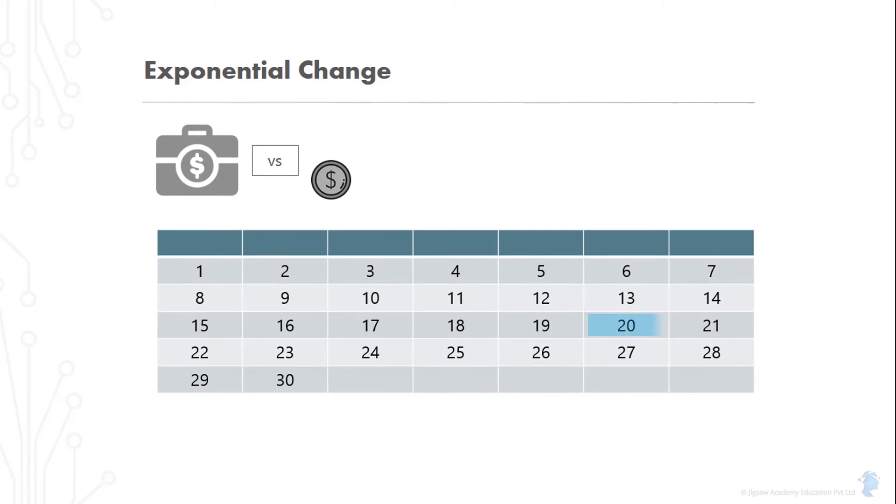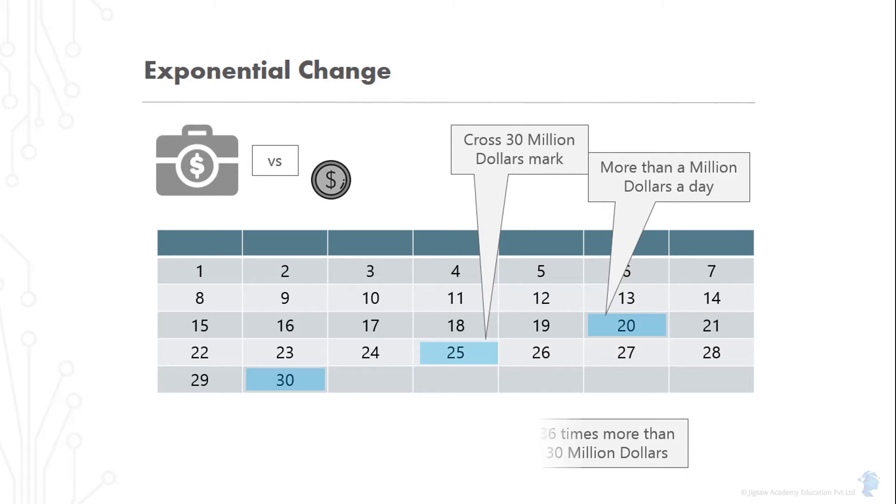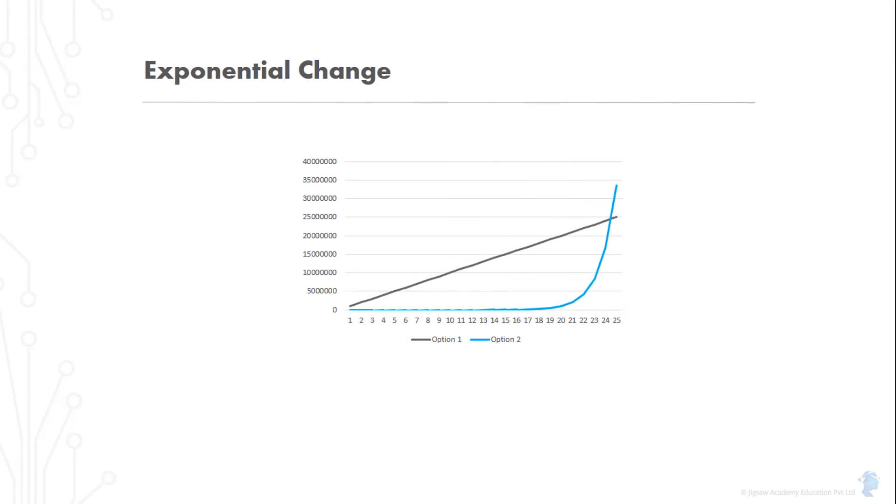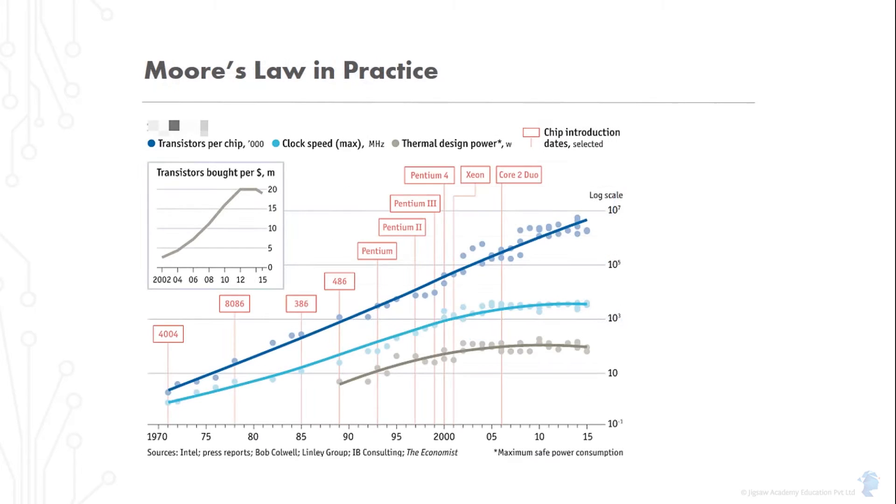Well, it turns out that in the beginning, you're going to be way behind with option two. But by day 20, you're making more than a million dollars a day. By day 25, you've crossed the payout from option one. And by day 30, you would have made more than a billion dollars or almost 36 times more money than if you'd chosen option one.